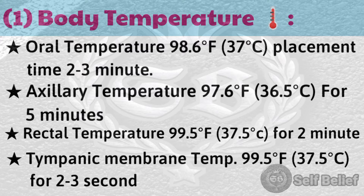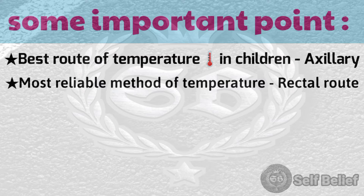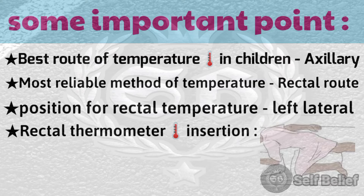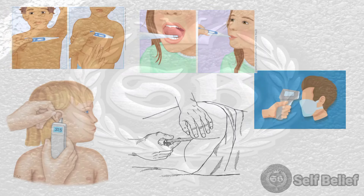Some important points about temperature: The best route for temperature measurement in children is the axillary route. The most reliable method is the rectal route. The position for rectal temperature is left lateral. Rectal thermometer insertion depth: adult 1.5 inches, infant or child 1 inch. Here are some diagrams of taking temperature.